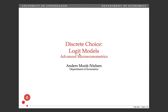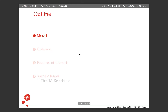Dear students, welcome to this tutorial on logit models. I'm going to introduce some of the concepts here briefly to try and prepare you better for the lecture. We'll talk about the model, the criterion function which is a likelihood function, some of the features we're interested in, and a few specific issues — namely the IIA restriction, or the independence of irrelevant alternatives.